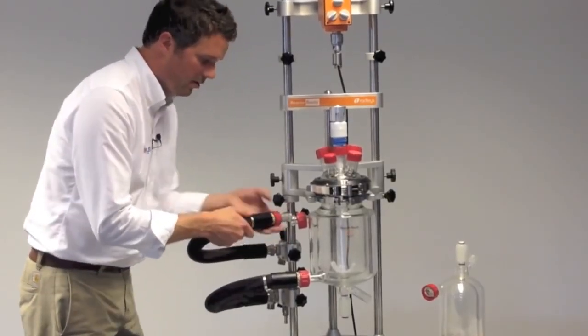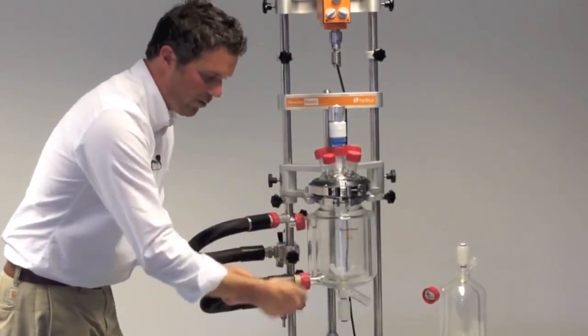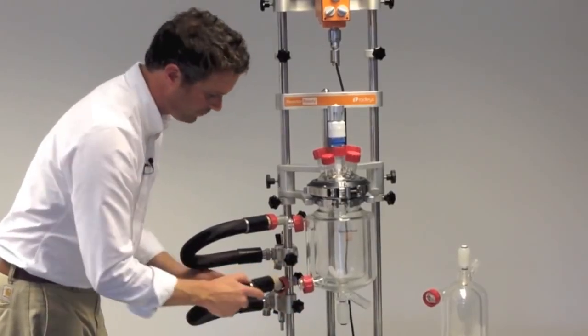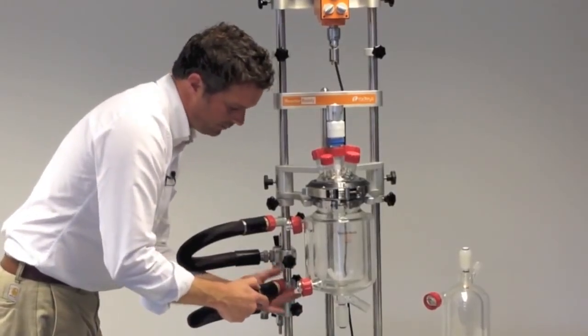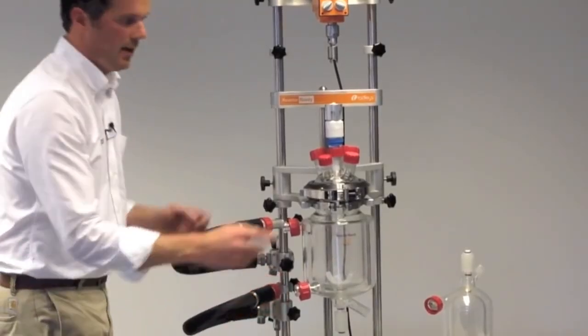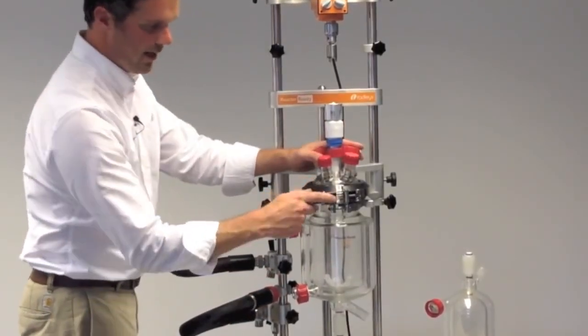I'll just pop this onto the hose tidy, just keeps hoses out of the way whilst you're changing vessels. Then we're free to take the lid off and undo the quick release clamp.